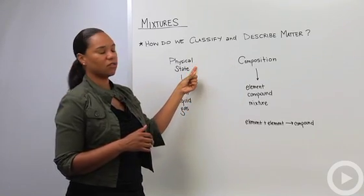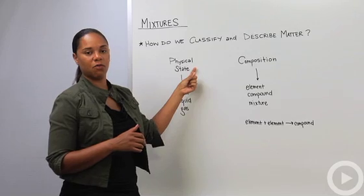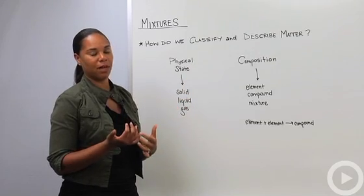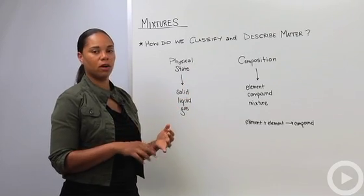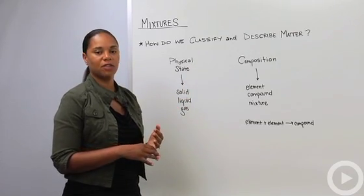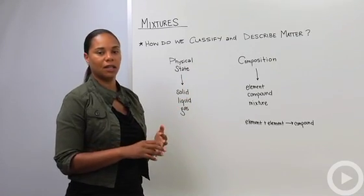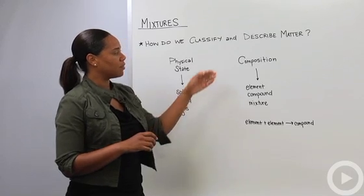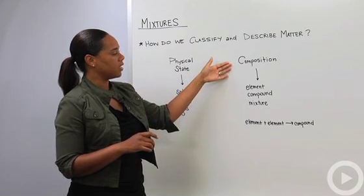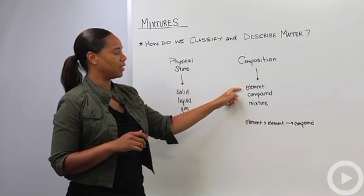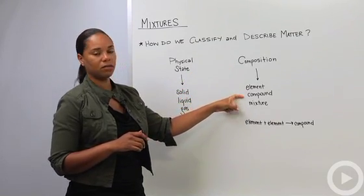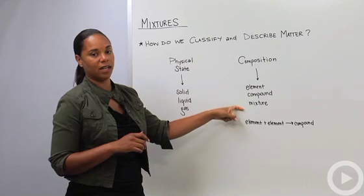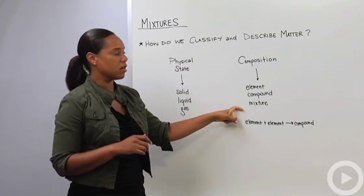The physical states are the things you've probably encountered before — discussing whether something is a solid, a liquid, or a gas. The composition refers to whether or not it's made up of elements or compounds, or whether or not it's a mixture.